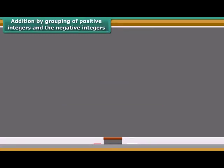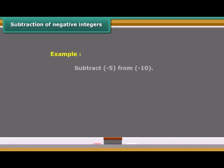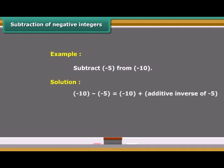For better understanding, we can solve one example. We arrange the numbers so that the positive integers and the negative integers are grouped together. Now let us find the value of minus 10 minus minus 5 using a number line. This is same as minus 10 plus 5, as the additive inverse of minus 5 is 5. First, we move five steps to the right on the number line starting from minus 10. We reach to minus 5.